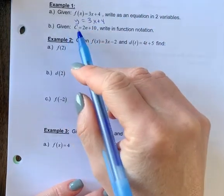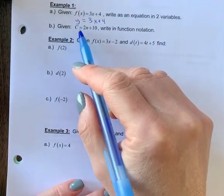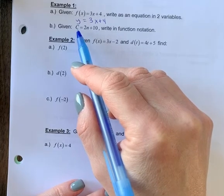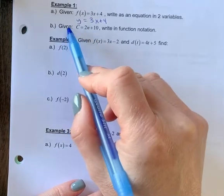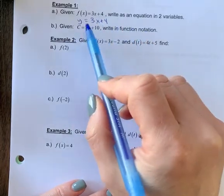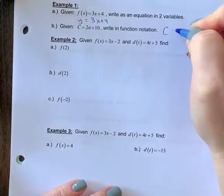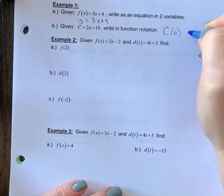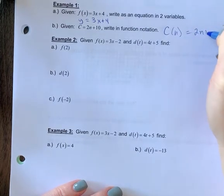All right. Given c equals 2n plus 10, how do I write this in function notation? This is the opposite. So instead of writing it as c, I'm going to write it as c of n equals 2n plus 10.